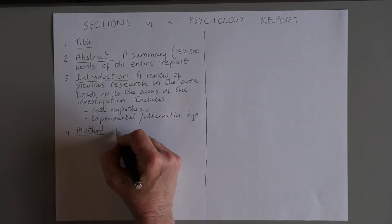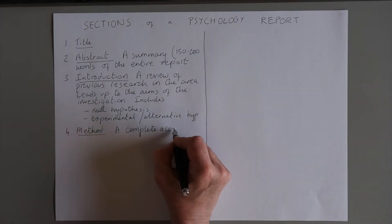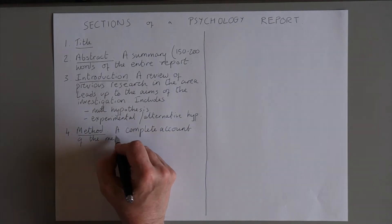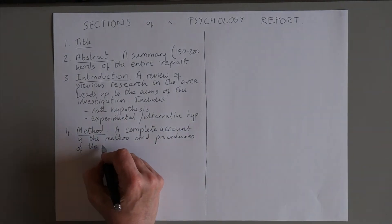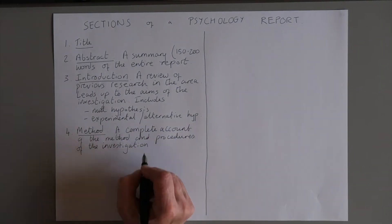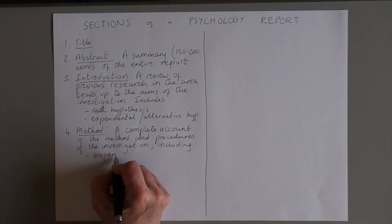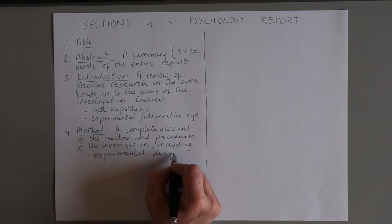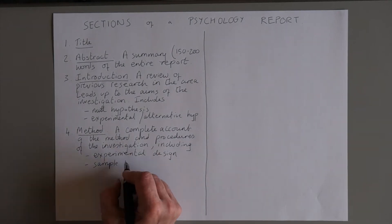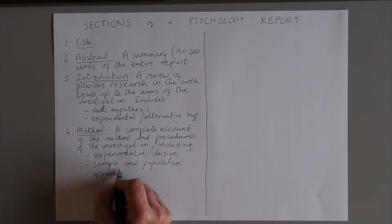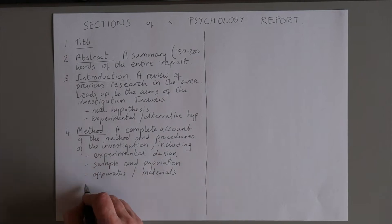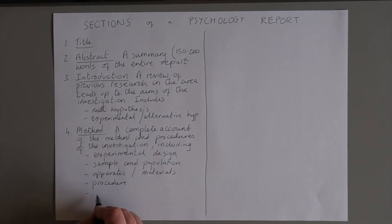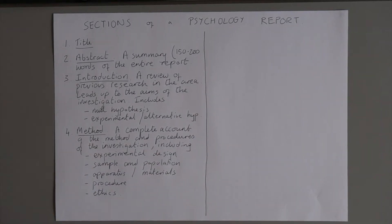To summarise, the things you need in the method section are: the experimental design, the sample and population, any apparatus used, a detailed description of the procedure, and a treatment of any ethical considerations.